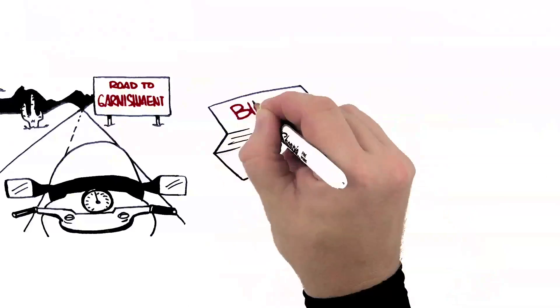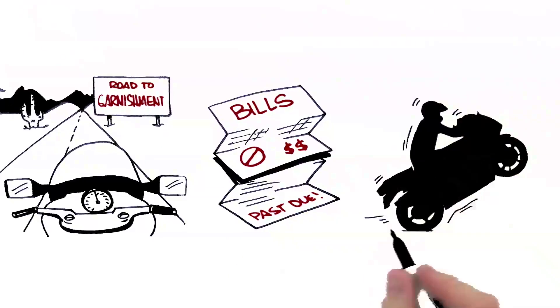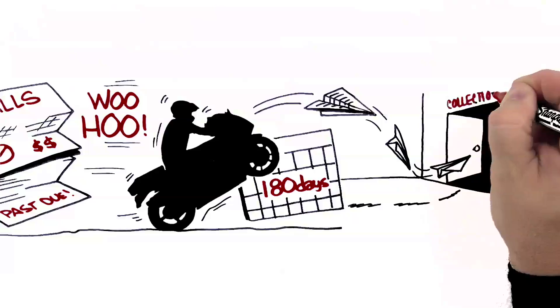He's so busy learning tricks, he doesn't pay the bills for his bike, not even the past due notices. After 180 days, the lender sends the debt to collections.